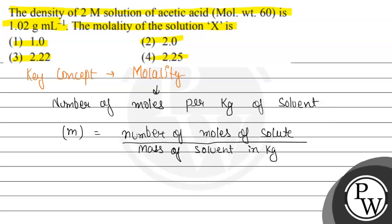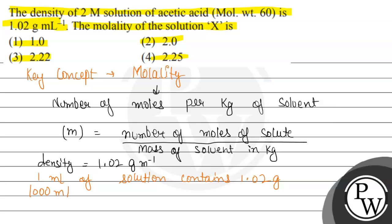In this question, the density given is 1.02 gram per mL. By this we can say that 1 mL of solution will contain 1.02 grams. So in 1000 mL, using the unitary method — 1.02 divided by 1 multiplied by 1000 — 1000 mL will contain 1020 grams.